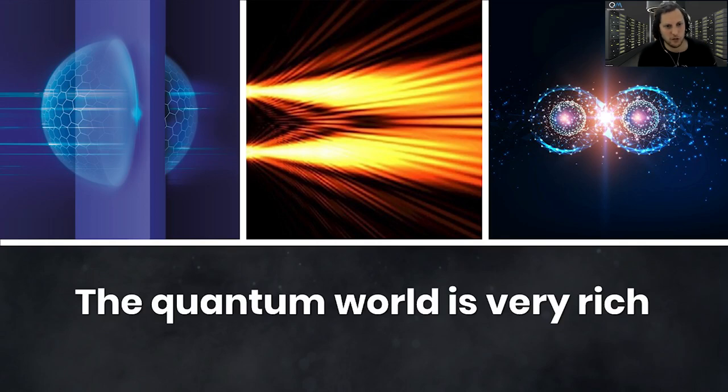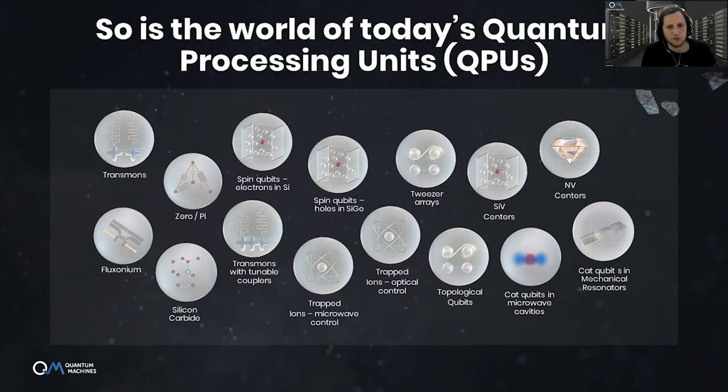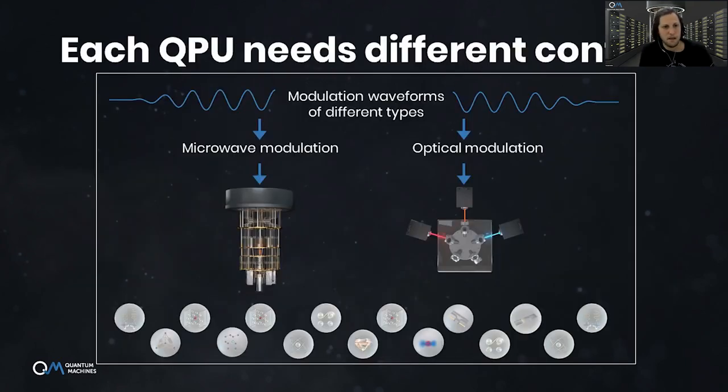How should we think about and design the control stack to accelerate the timeline towards useful and impactful quantum computers? The quantum world is very rich, as is the world of today's quantum processing units or QPUs. There are different types of qubits, different architectures, different ways to perform gates, and new ideas come up every day.